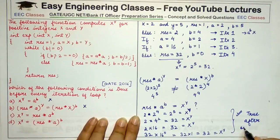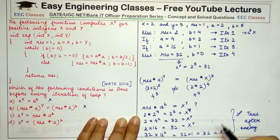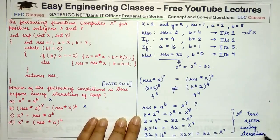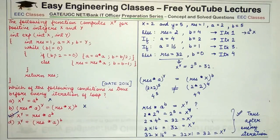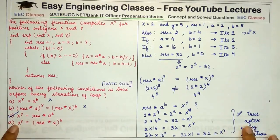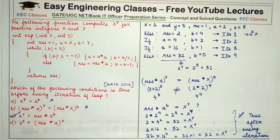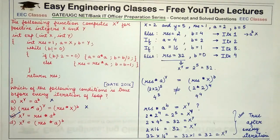This is the correct answer. You need not check the fourth option since the third has been verified for all iterations. You can take any other values of x and y to verify which option is correct. That was all for today's lecture. Please like and share the video, and subscribe to Easy Engineering Classes for more lectures on exam preparation and computer science subjects. Stay tuned. Good luck.